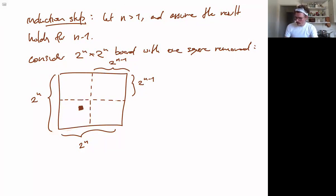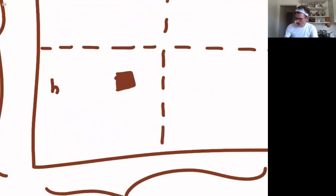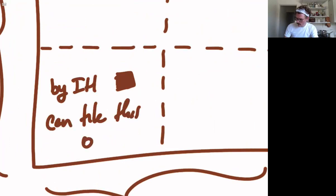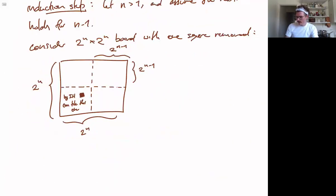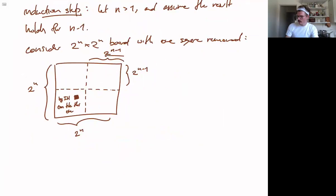So this one, let me write in here in little small letters. By induction hypothesis, we can tile this one. Because it is a 2 to the n minus 1 by 2 to the n minus 1 board with a single square removed. But what about these three? They do not have a single square removed, so we cannot apply the inductive hypothesis. So we will have to do something else, or we will have to think a little bit harder.